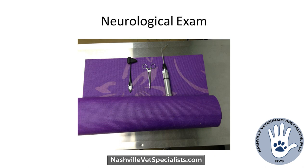We don't need any fancy equipment to do the neurologic exam. You need a good bright light source, a reflex hammer, some hemostats, and ideally a non-slip surface. We use a yoga mat on our exam tables to help with that — it's pretty cheap. Throughout the hospital the floors are a little slick, so we'll often take animals outside or into our rehab room, which has good traction.